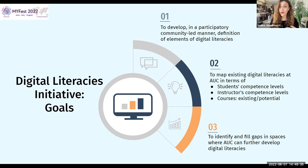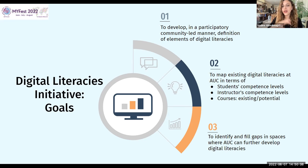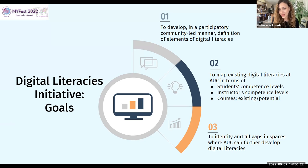The first goal of our initiative was to develop, in a participatory community-led manner, a definition of the elements of digital literacy. We established that definition and a working model, then wanted to map existing literacies at AUC versus identifying and filling gaps — looking at student competence levels, instructor competence levels, and which existing or potential courses intentionally integrate digital literacies. After mapping, we identified where AUC could further develop digital literacies, and then decided to phase it out rather than go campus-wide all at once.